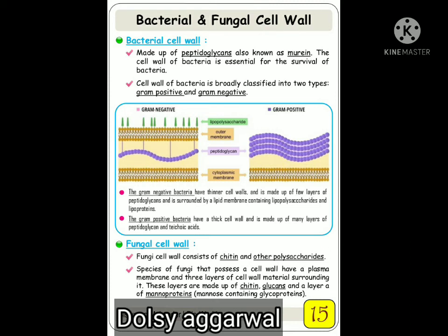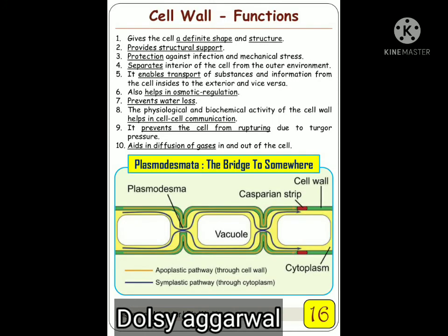The mannose derivatives are glycoproteins — that means protein molecules joined with sugar moieties. The sugar moiety in this case is mannose. Mannose is an epimer of glucose at carbon position number 2.